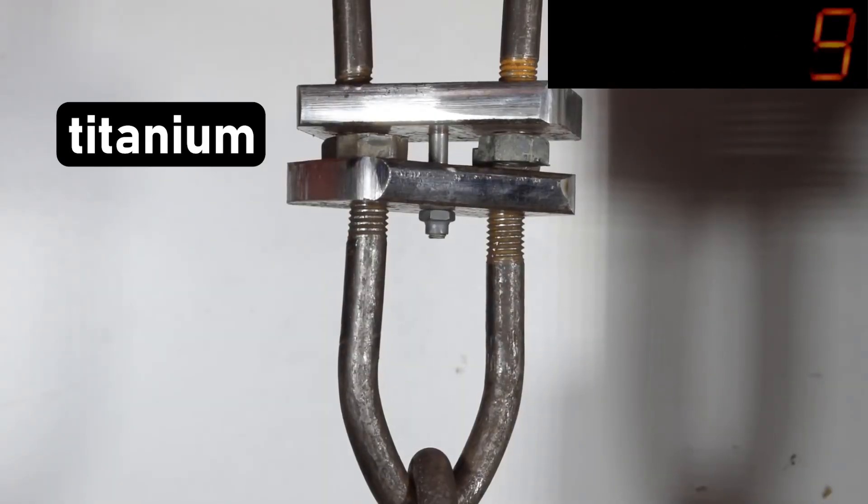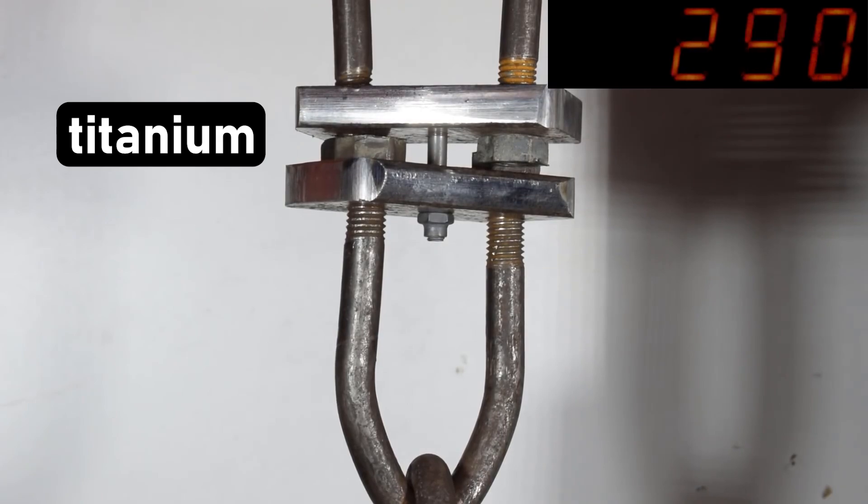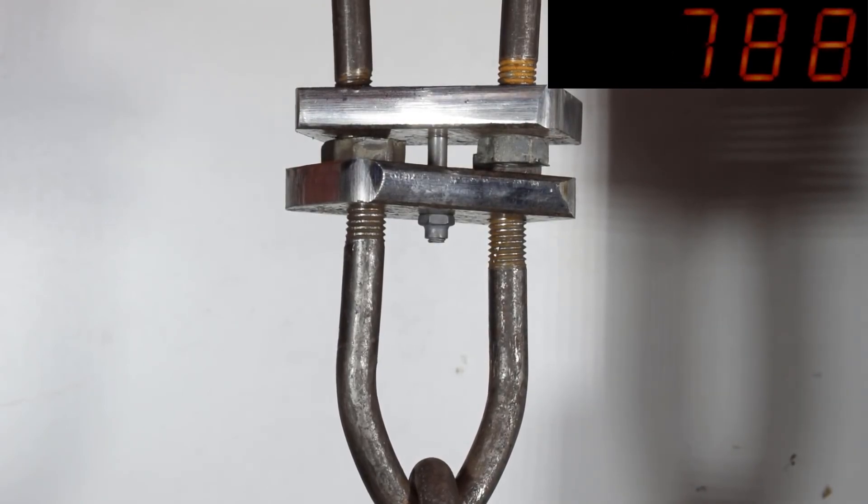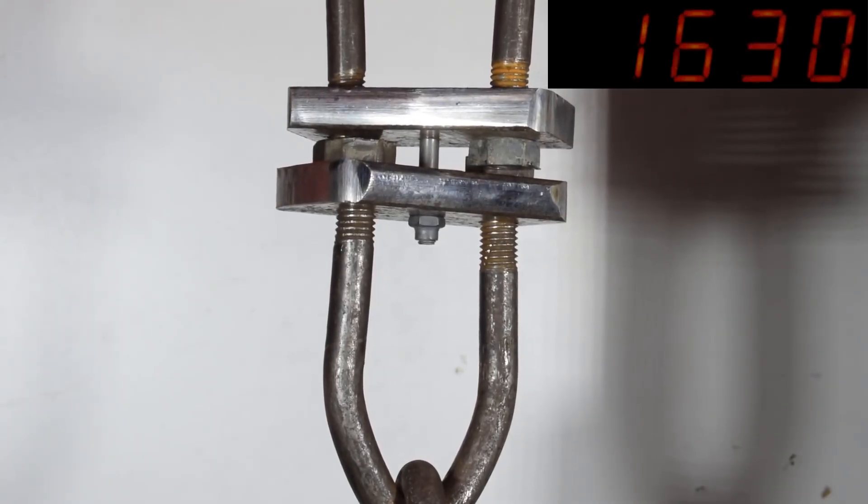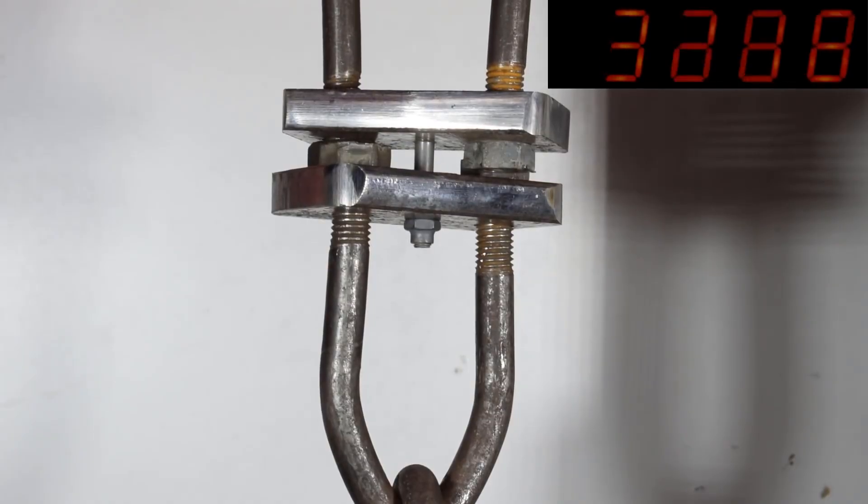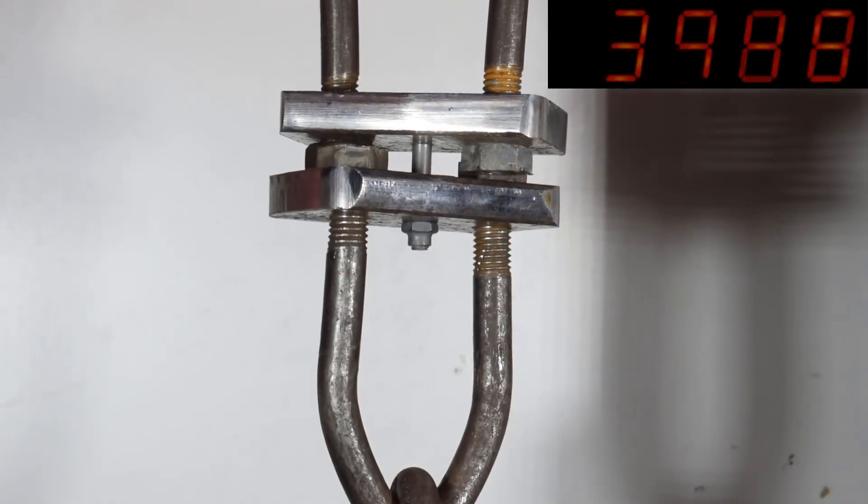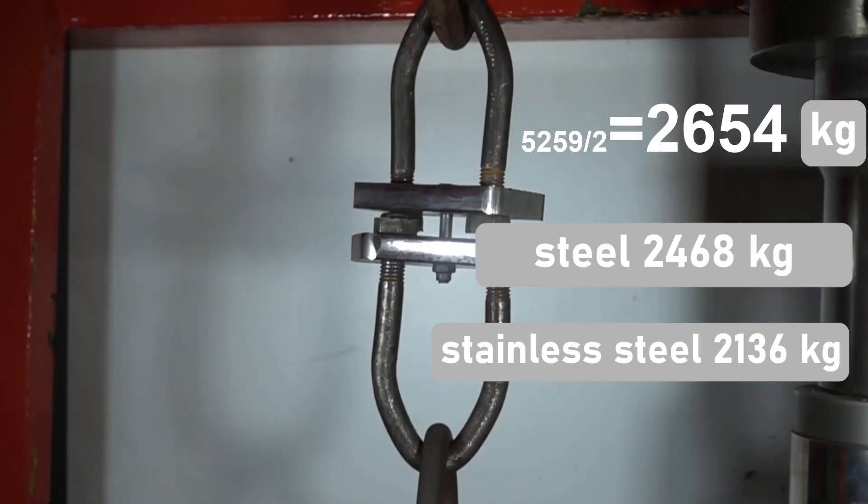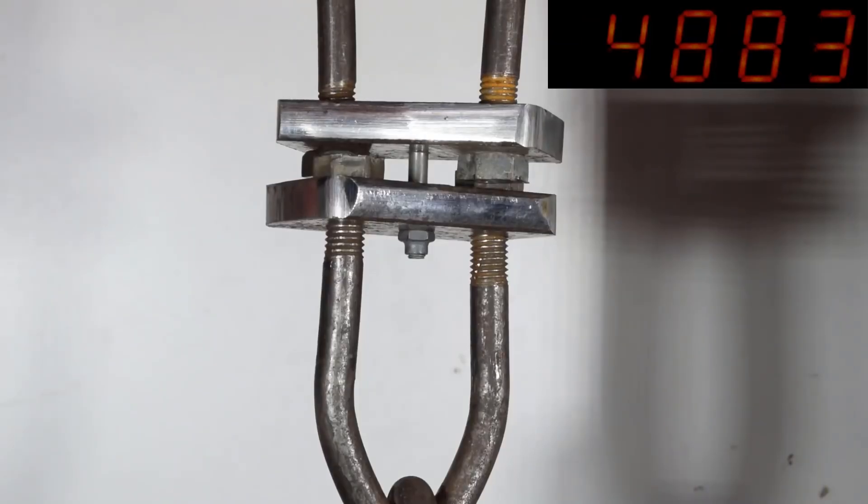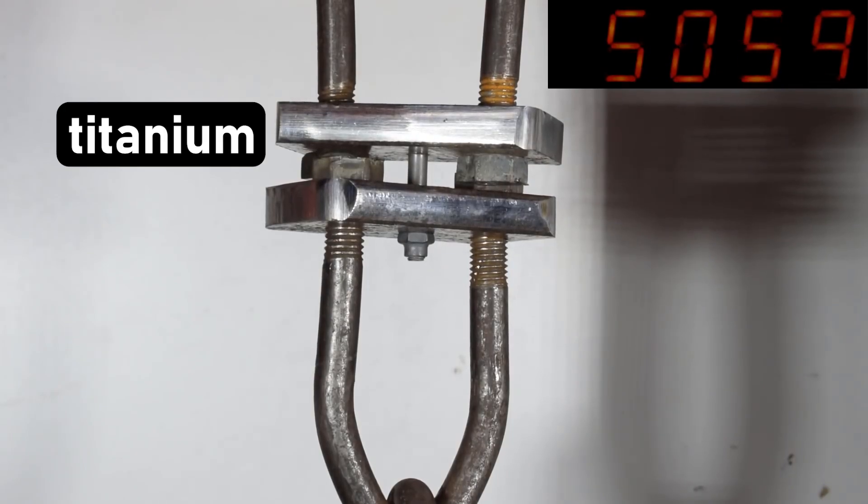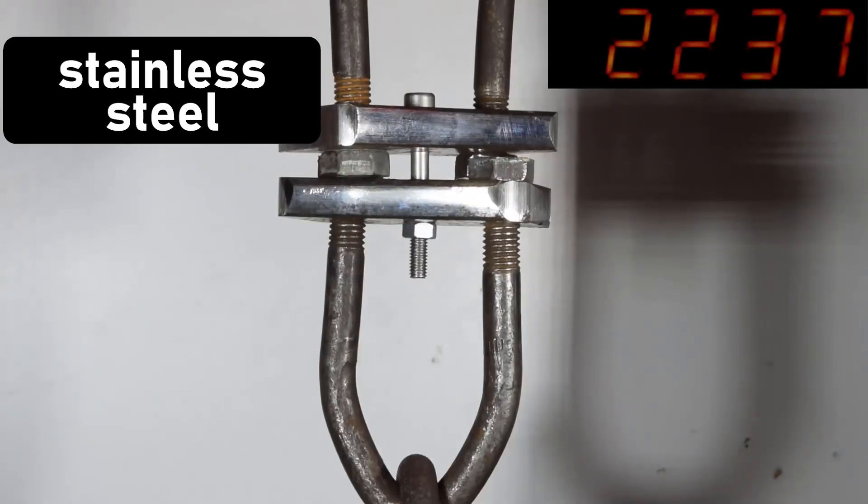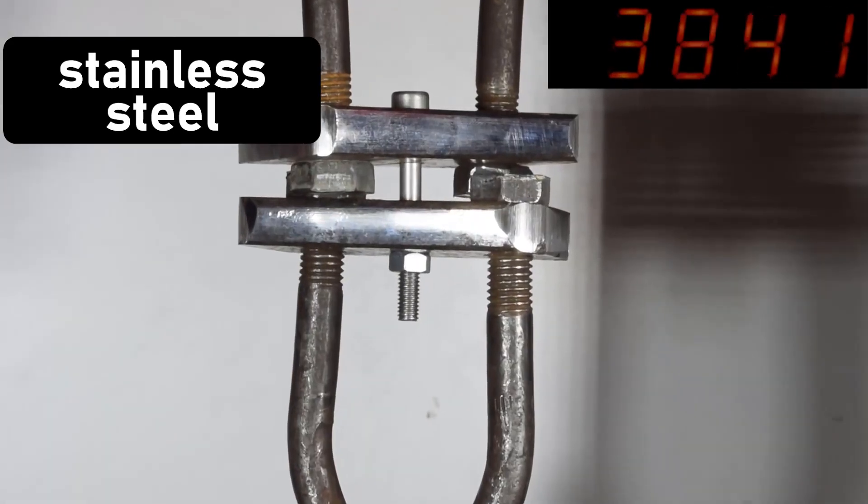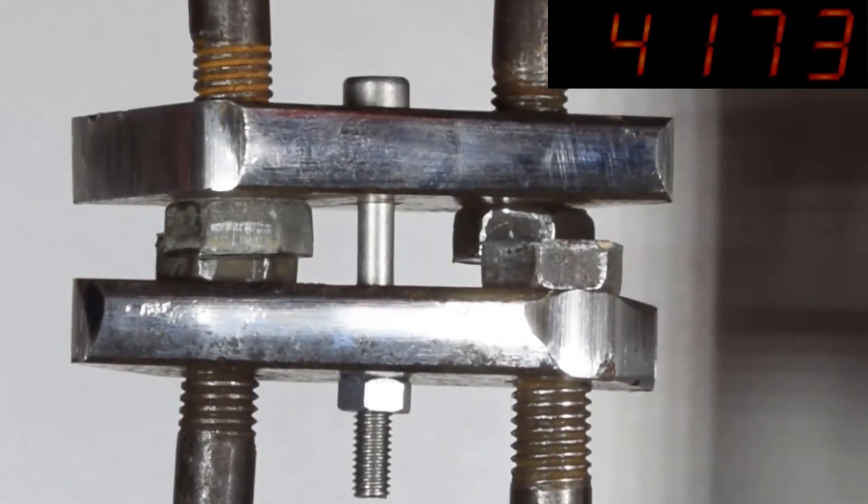What load will the titanium bolt withstand under tension? As expected, the titanium bolt withstood the highest load compared to the previous samples. If you examine the process of bolt failure in detail, using the titanium bolt as an example, the load increases up to a certain value and then its failure occurs abruptly. Steel bolts, on the other hand, fail a bit differently. The load increases up to a certain maximum value, then the bolt starts to elongate, the load decreases and the bolt breaks.